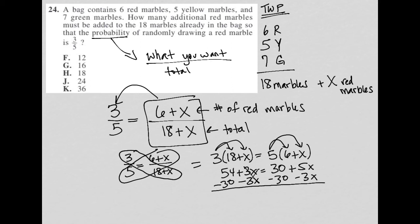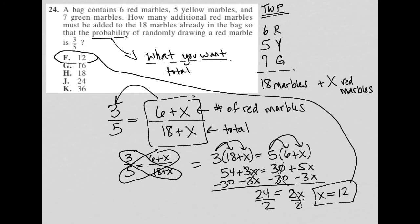So the X is gone here, but 54 minus 30 is 24. So I have 24 equals—my thirties are gone over here—five X minus three X equals two X. Now this becomes a very simple question. 24 divided by two is 12. The twos cross out on the right, so X equals 12. That means I needed to add 12 red marbles in order for this to work out, which makes choice F the correct answer.